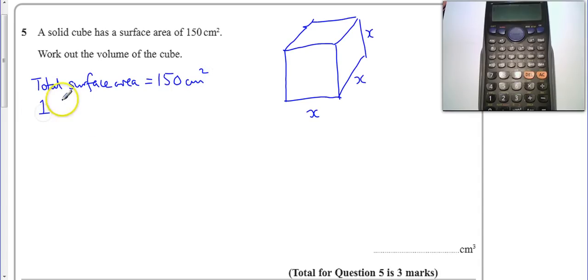So one face is 150 divided by 6, which equals 25cm squared.